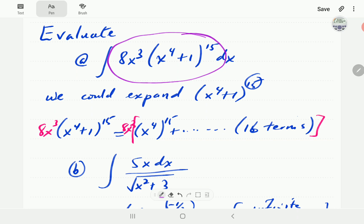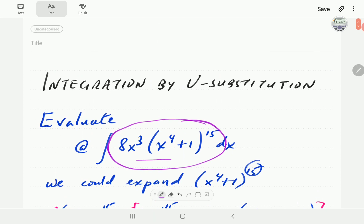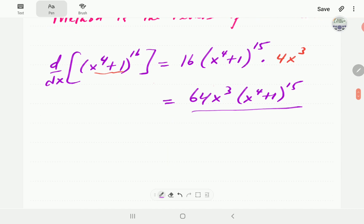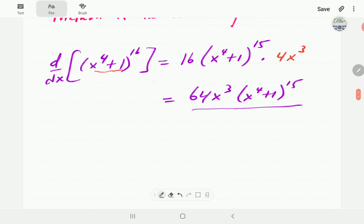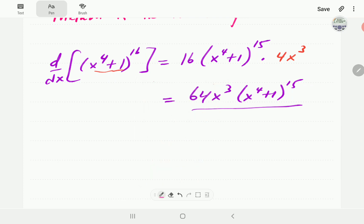Notice how this expression looks pretty close to this one. It's actually a constant multiple of that one. If you multiply this expression by 8, then you get this one.